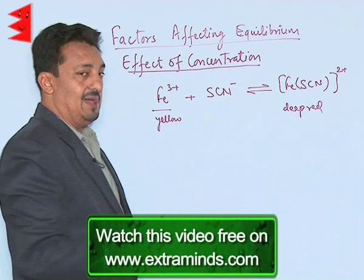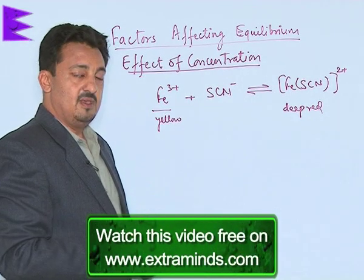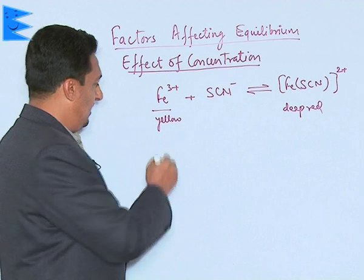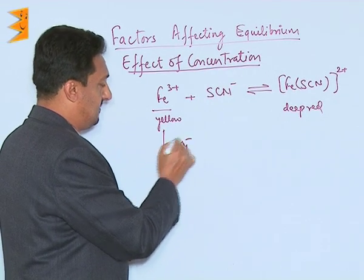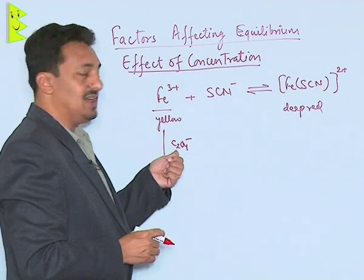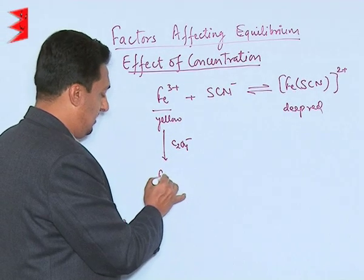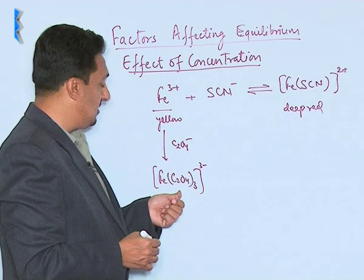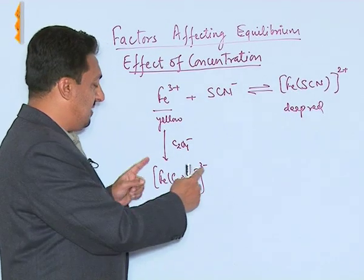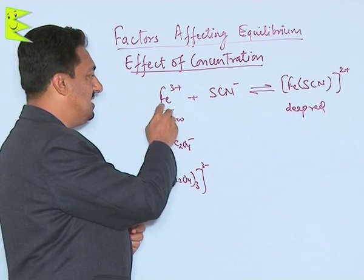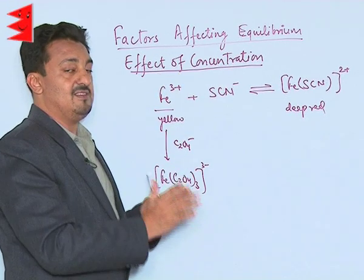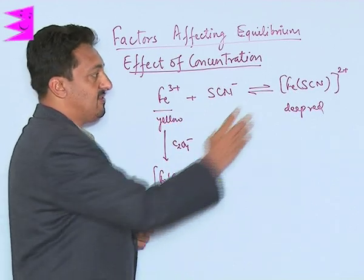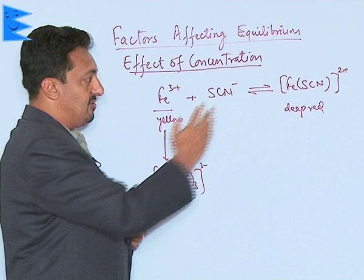Once the equilibrium is established, we can increase or decrease the intensity of the color by manipulating the concentration of the thiocyanate ions. For example, we can add oxalic acid to the reaction mixture. The oxalate ions immediately combine with the ferric ions and form a complex called trioxalato ferrate. As this complex is formed, the ferric ions are consumed, and due to the decrease in concentration of one of the reactants, as stated by Le Chatelier's principle, the equilibrium will move in the backward direction. This complex will start dissociating into more ferric ions so that equilibrium is re-established.